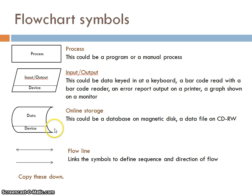The online storage is basically either a database or any kind of online storage and what device it's stored on. Is it on a magnetic disk, for example a hard disk drive? Is it on CD-RW, is it on flash memory? So what is the device that this is stored on, and this is our storage symbol.